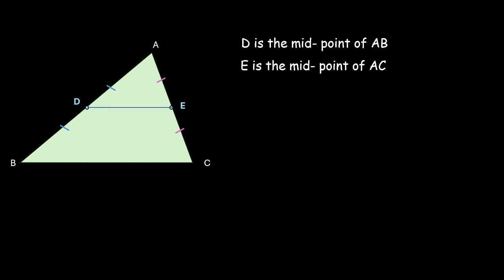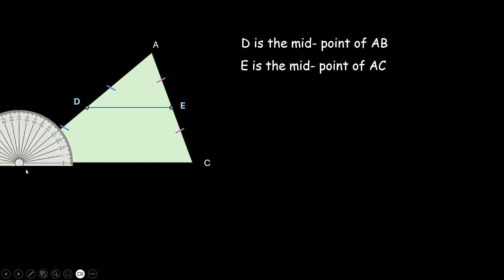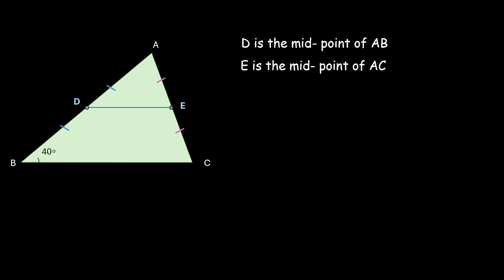What we are actually doing is trying an experiment to see if we are able to verify or come up with some result. I just want to check angle DBC — this is 40 degrees. Now let's check angle ADE — this is again 40 degrees. That means these two angles, since they are forming a pair of corresponding angles, DE is parallel to BC.